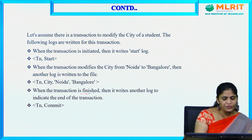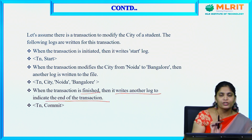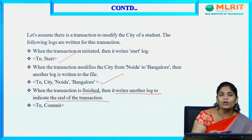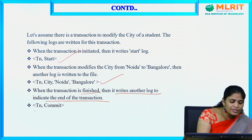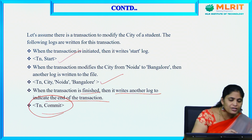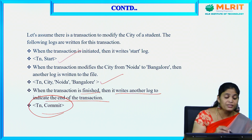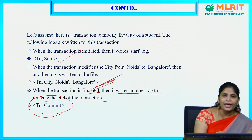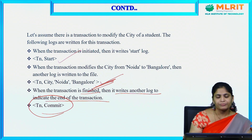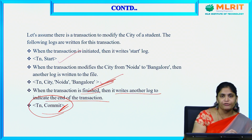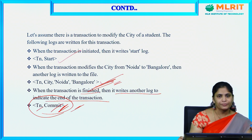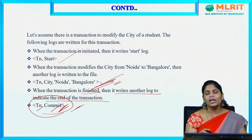When the transaction is finished, it writes another log to indicate the end of the transaction. After the transaction commit, the data will be updated in the database permanently. So the representation is: TN start, followed by the update log record, followed by TN commit. This is the representation of a log.